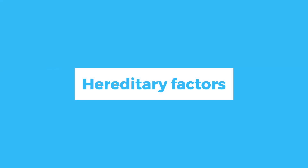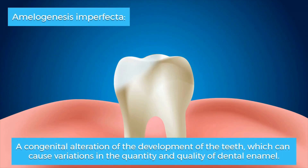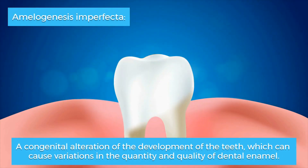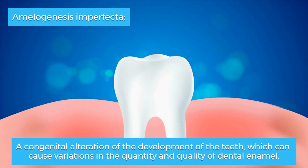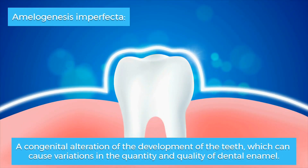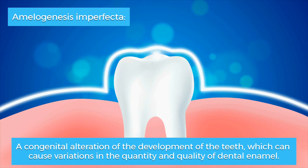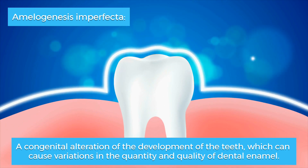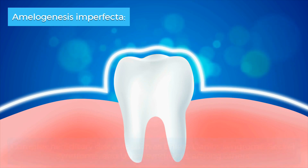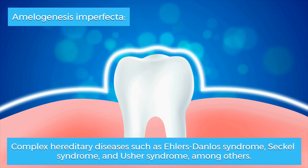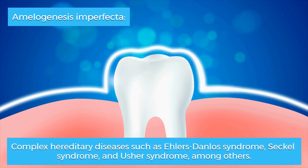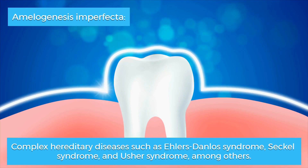Hereditary factors: Amelogenesis imperfecta is a congenital alteration of the development of the teeth, which can cause variations in the quantity and quality of dental enamel. Complex hereditary diseases such as Ehlers-Danlos syndrome, Seckl syndrome, and Usher syndrome, among others.